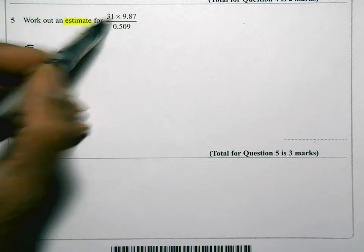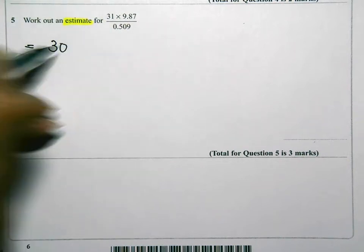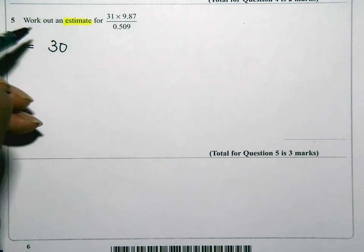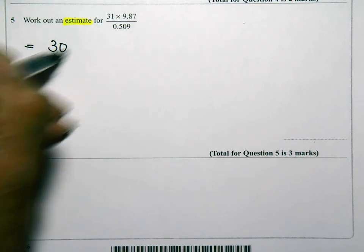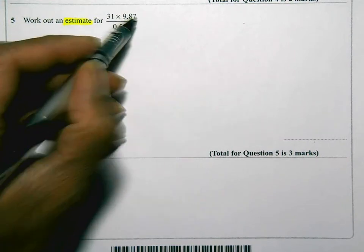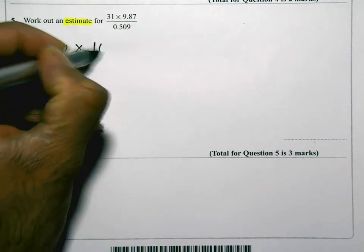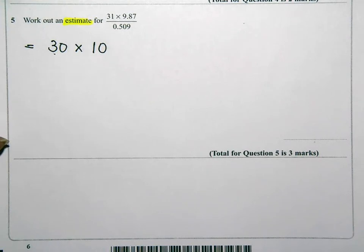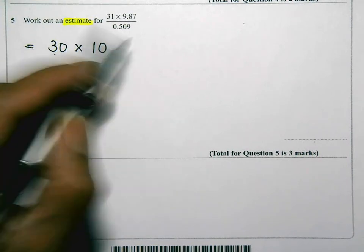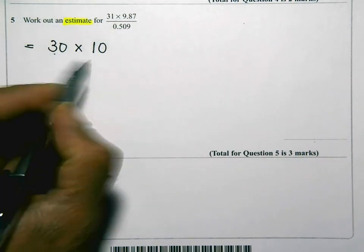So 31, I'm going to rewrite that as 30. So that's pretty straightforward. It's just one number, everything else zeros, times 9.87, now that could be written as 10. So one number, everything else zeros, 9.87 to one significant figure is 10.